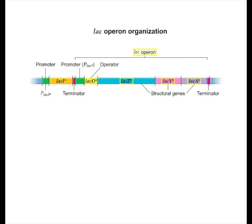An operon is a cluster of genes along with an adjacent promoter and operator that control the transcription of those genes.